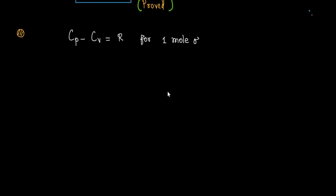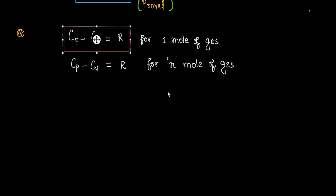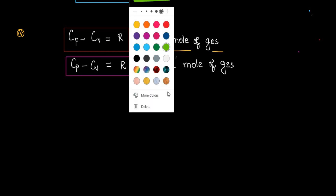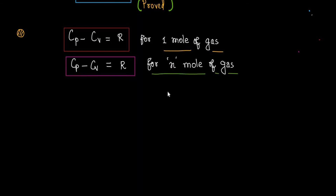As additional information, Cp minus Cv equals R for 1 mole of gas, and Cp minus Cv equals R also holds for n moles of the ideal gas.